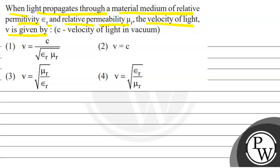Options are: v equals c upon root of epsilon_r mu_r, v equals c, v equals root of mu_r by epsilon_r, or v equals epsilon_r upon mu_r. We have to choose the correct option.